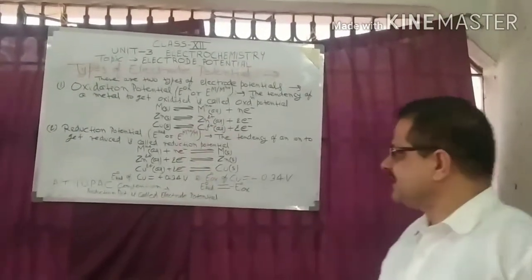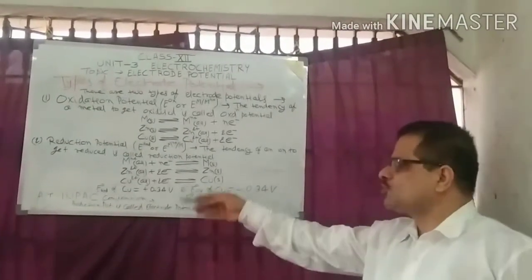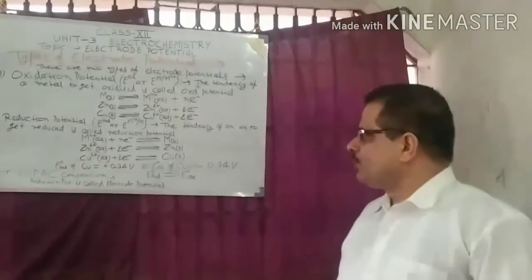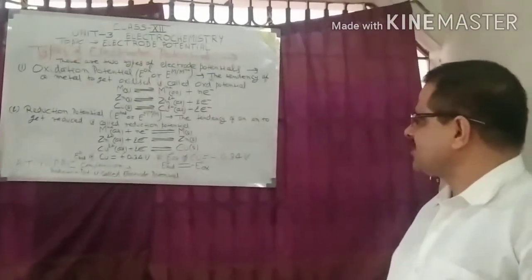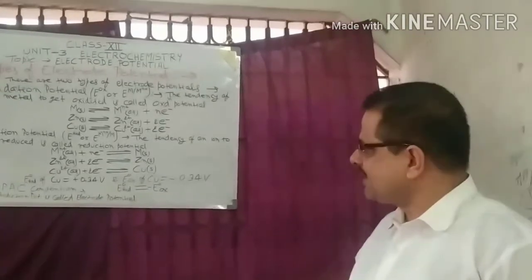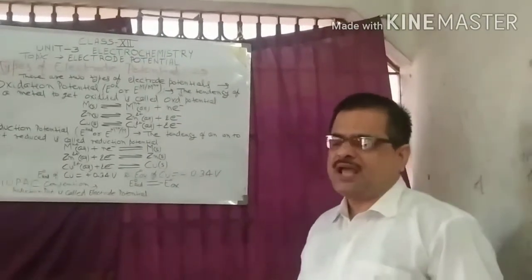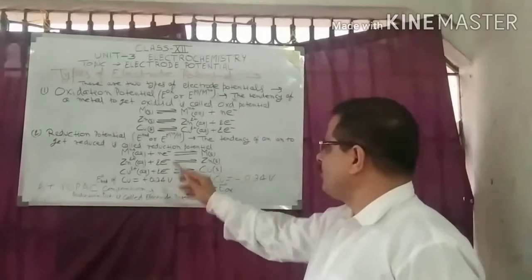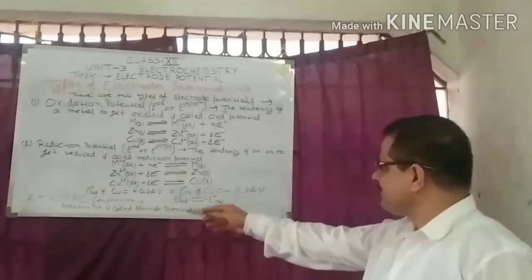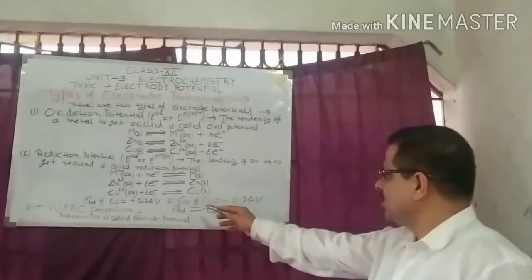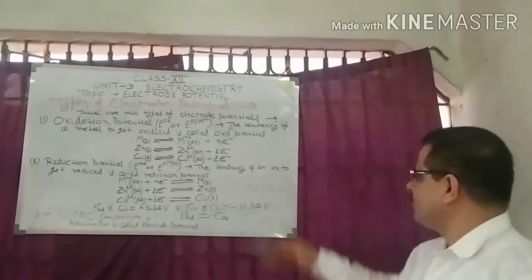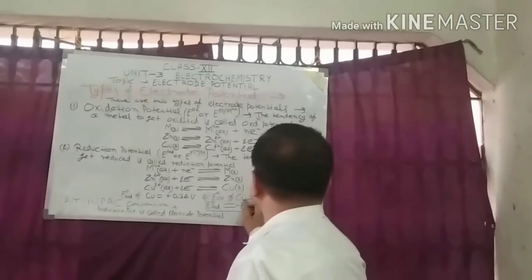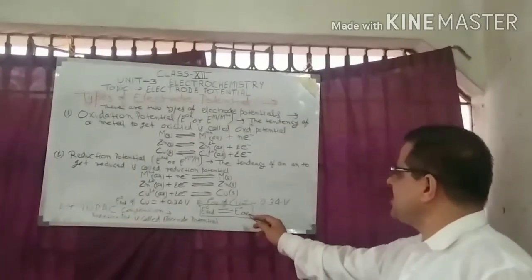According to the IUPAC convention, reduction potential is called electrode potential. It is clear from this discussion that the value of standard reduction potential and standard oxidation potential is the same but with opposite sign. For example, the standard reduction potential of copper is +0.34 V, and the standard oxidation potential of copper is −0.34 V. Thus, standard reduction potential equals minus the standard oxidation potential.